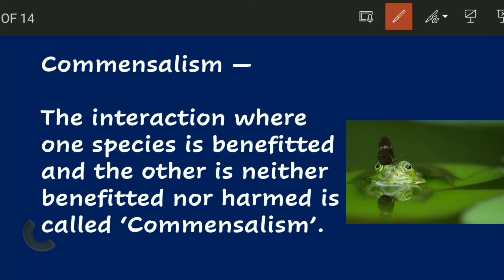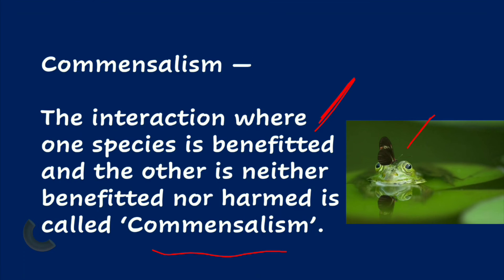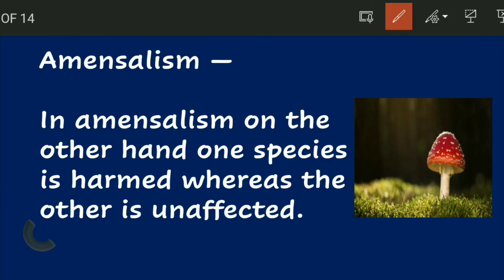Next is commensalism — an interaction in which one species benefits but the other species is neither harmed nor benefited. For example, one animal riding on the back of another: the rider benefits from travel while the other is unaffected. Next is amensalism, where one species is harmed and the other is not affected — like pine needles falling to the ground, which release toxins that prevent germination of other seeds nearby.